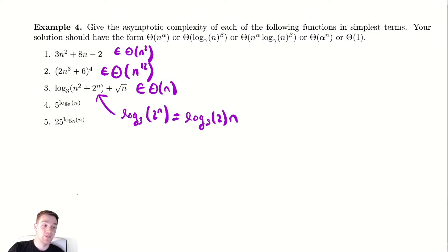For 4, this isn't nicely in any of our forms yet so we might need to do some simplifications. You might remember that there are some convenient log rules. So our log rule we can use here is that if you have an exponent with a log in the exponent and they are the same base, so 5 and log base 5, you can cancel those out and you're just left with whatever was inside of the log. This is because exponentiation and logarithms are inverse functions of each other so they cancel each other out. So for 4 this is going to be equal to n which is in Θ(n¹).